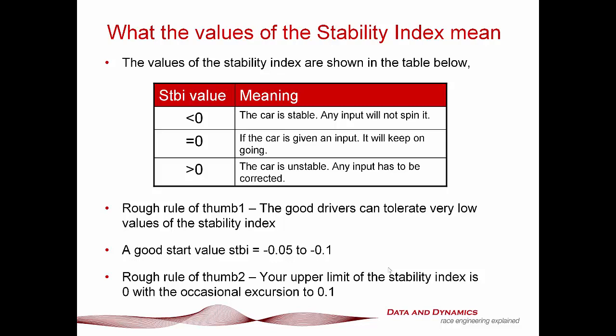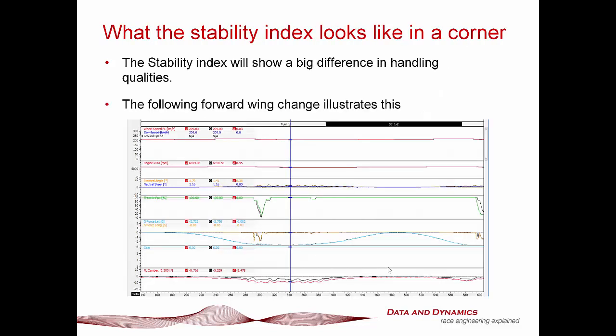Rough rules of thumb: less than zero means the car is stable — give it an input and it will return to steady state. If it's zero, give it an input and it's just going to keep going. If it's greater than zero, you turn the steering wheel and it's going to swap ends, and the driver coming back to the pit lane will be referring to you in extremely negative terms. The better your driver, the less stability index they can tolerate. Good rough rules of thumb: start at about minus 0.05 for a really good driver, about minus 0.1 for average drivers, and about minus 0.15 for less confident drivers, because they need that extra stability.